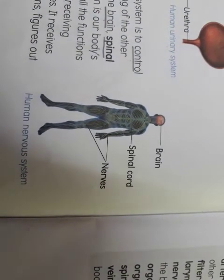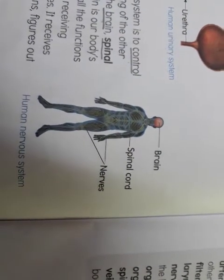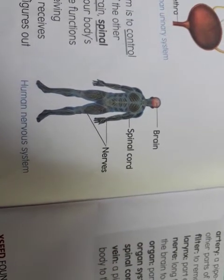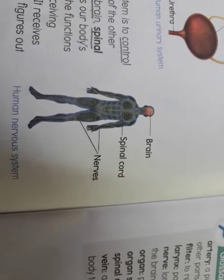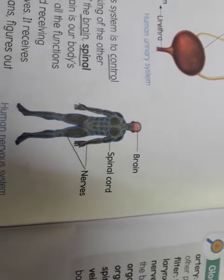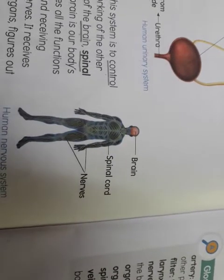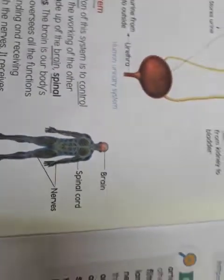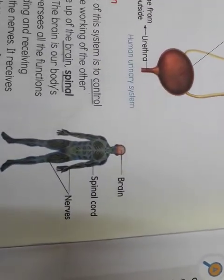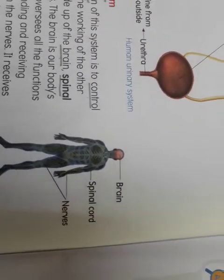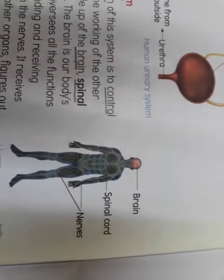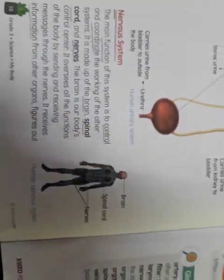The brain oversees all the functions of the body by sending and receiving messages through the nerves. It receives information from other organs, figures out how to react to that information, and then sends signals to the organs to do work. I hope this block is clear to you all. Thank you, students.